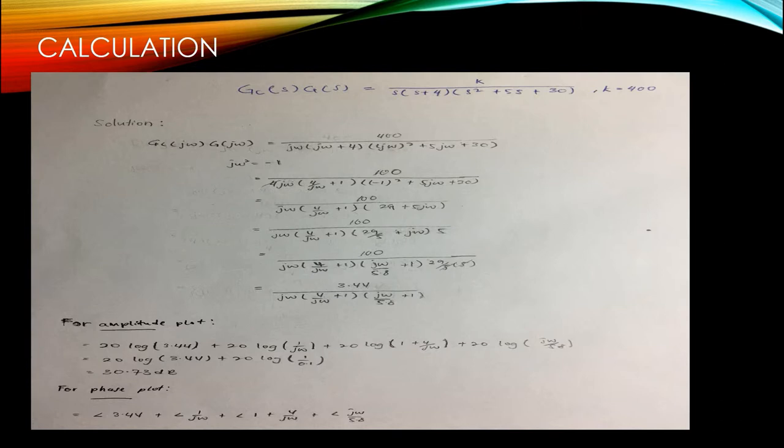We did the transfer function. We assume that j omega to the power of 2 is equal to negative 1, so we simplified the equation and then we got the final solution, final answer.